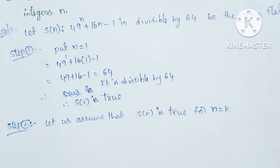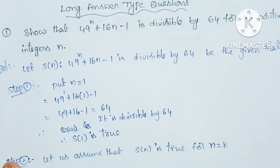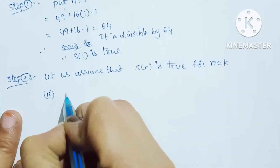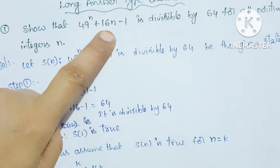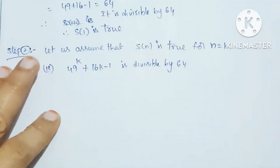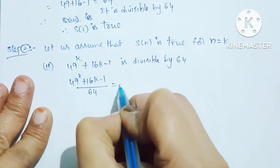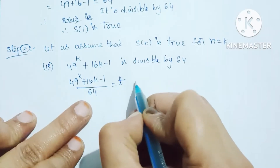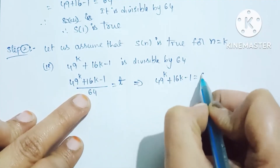The statement we apply: we have the given statement which is 49 power n plus 16n minus 1. It would be true for natural number k. We assume that 49 power k plus 16k minus 1 is divisible by 64. That means 49 power k plus 16k minus 1 divided by 64 equals some integer t.